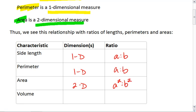Now what do you think that means for volume? Volume opens us up into another dimension. We're now in 3 dimensions. So hopefully you are able to guess that the ratio would be a cubed to b cubed.